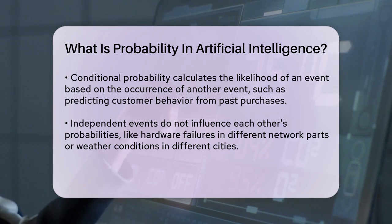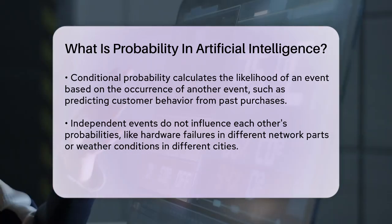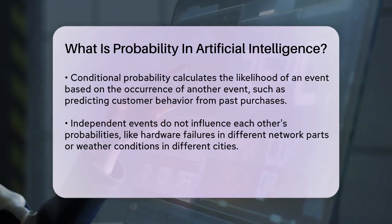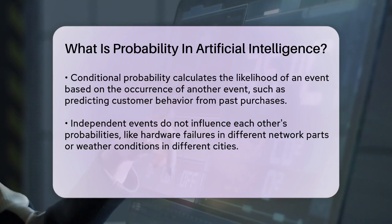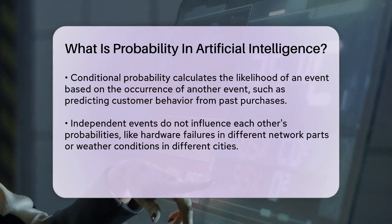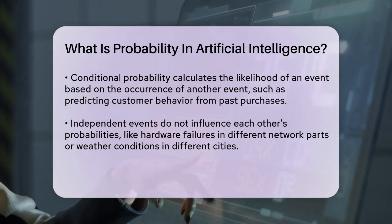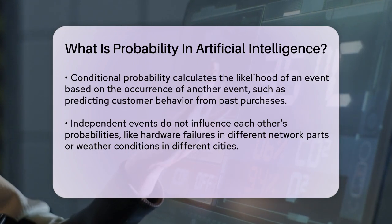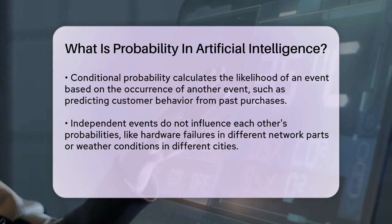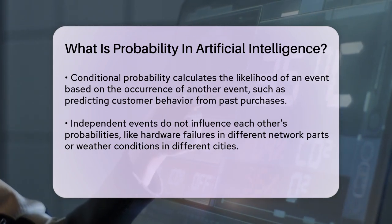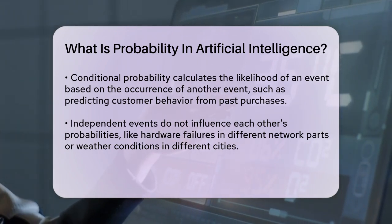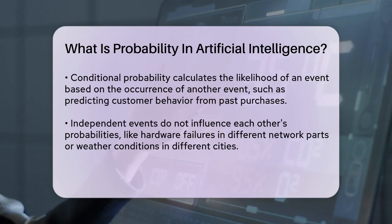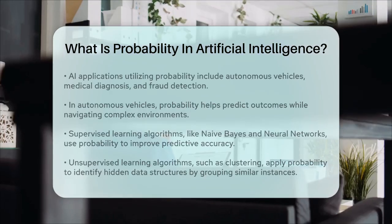AI systems use these probabilistic concepts in various applications, such as autonomous vehicles, medical diagnosis, and fraud detection. For example, an autonomous vehicle uses probability to calculate the likelihood of different outcomes when navigating through a cluttered environment or predicting the next move of another vehicle.